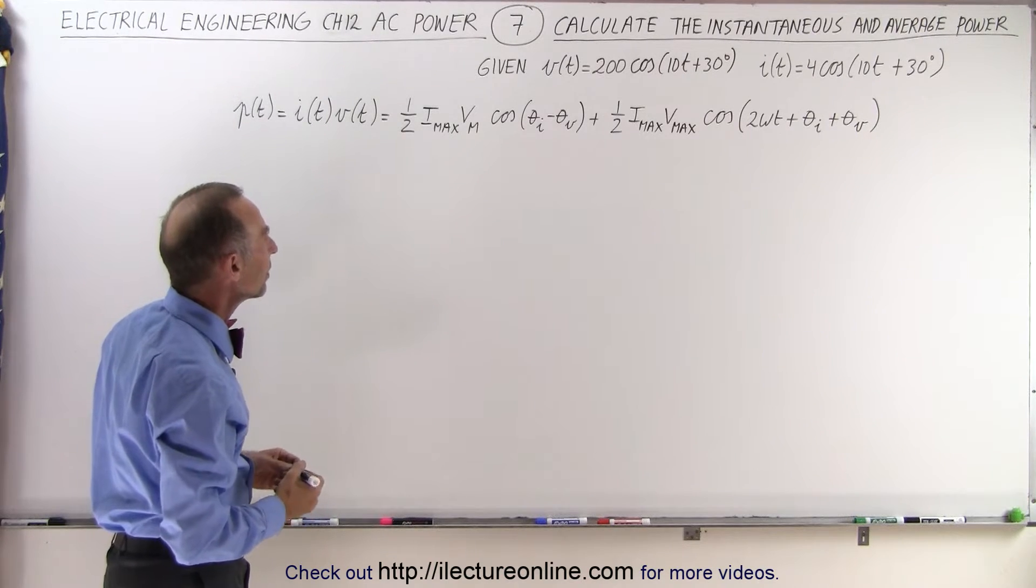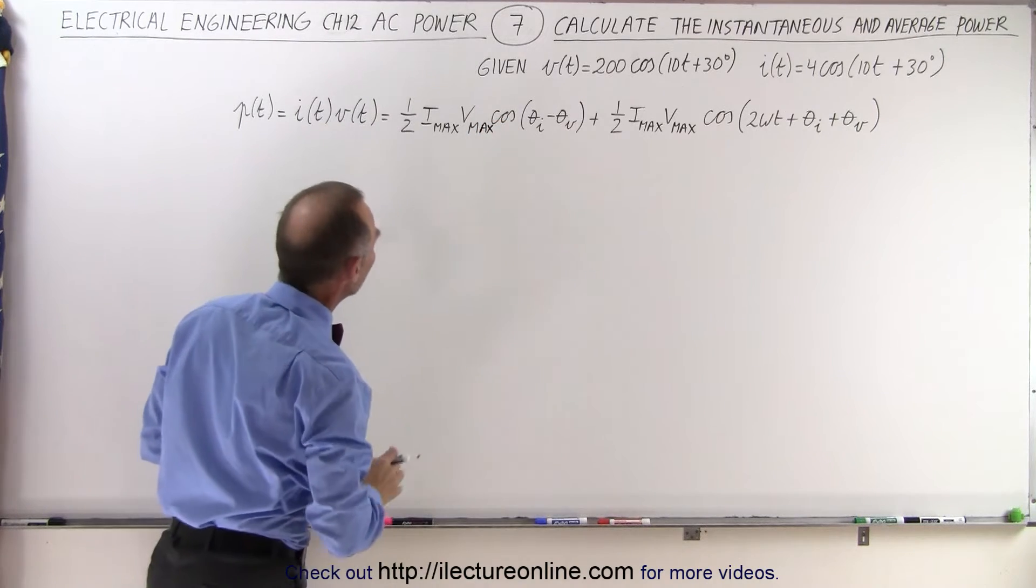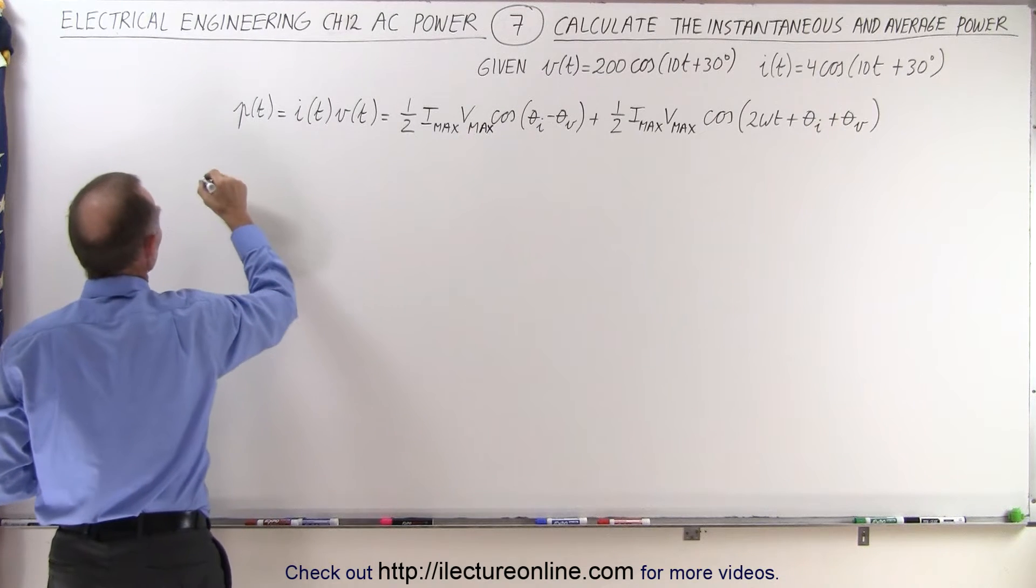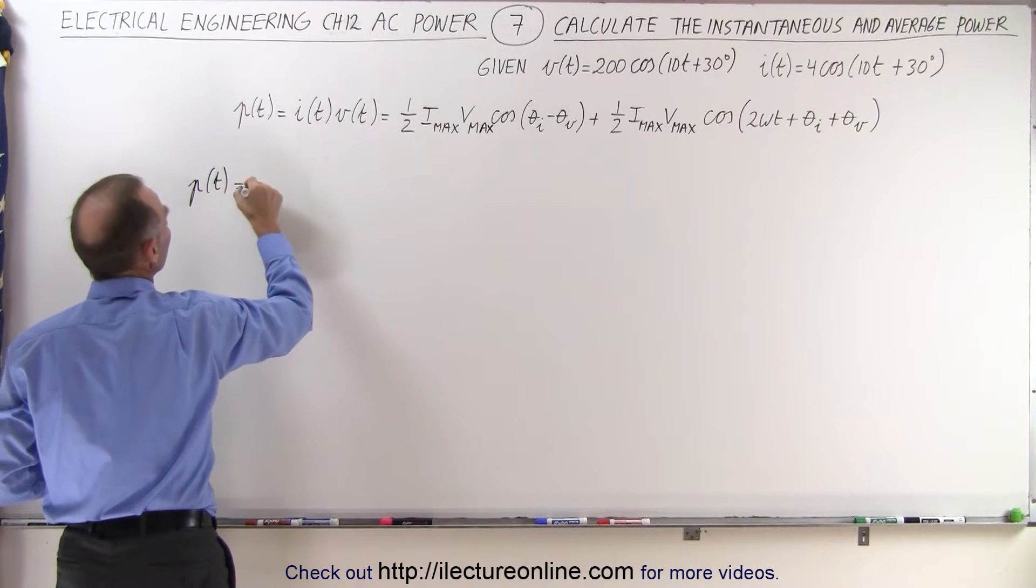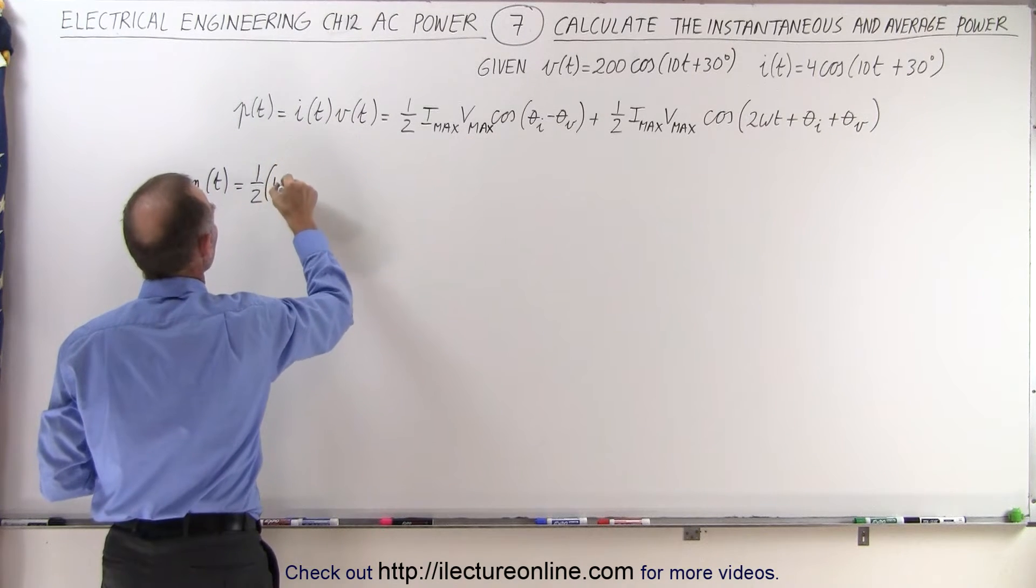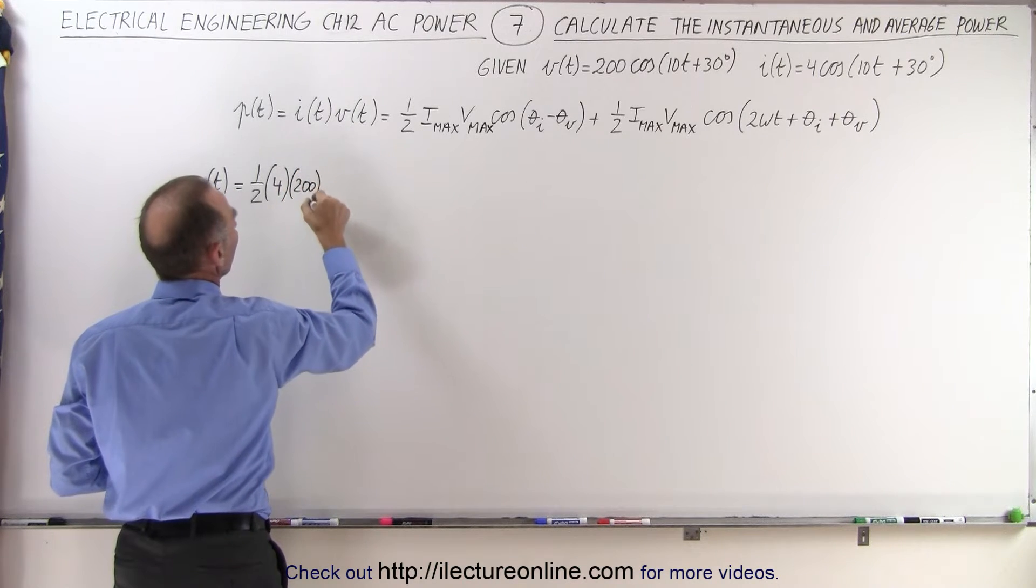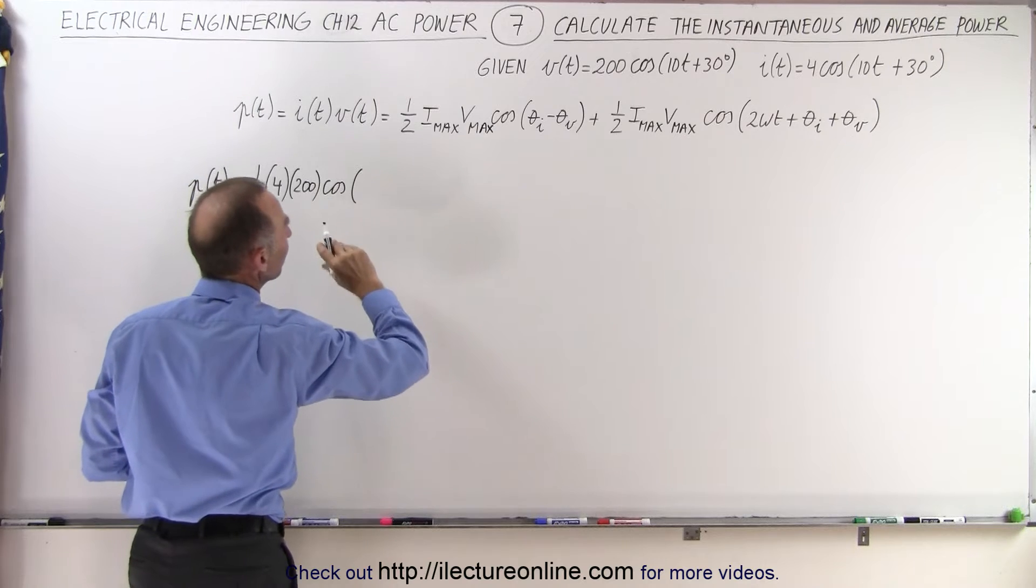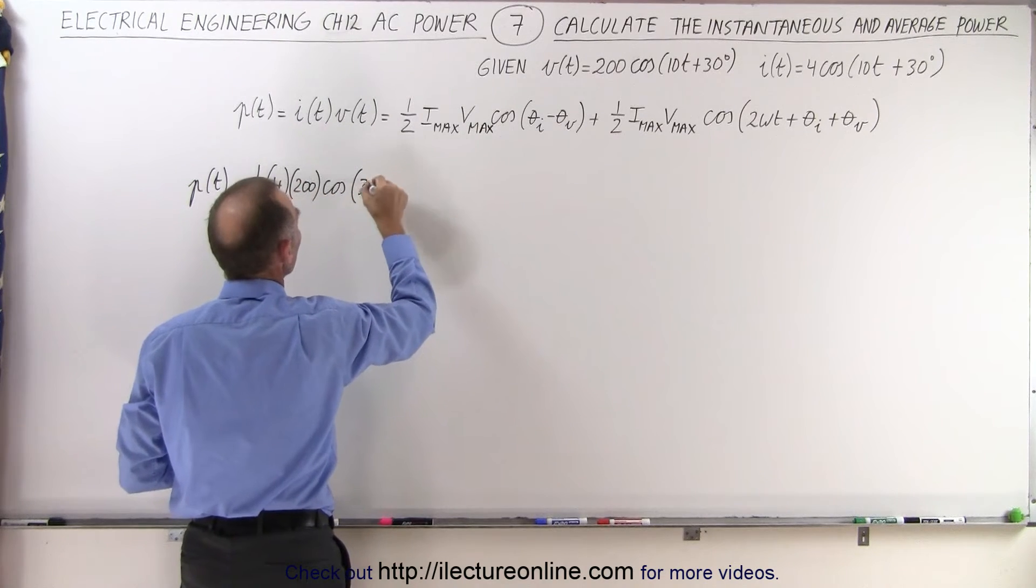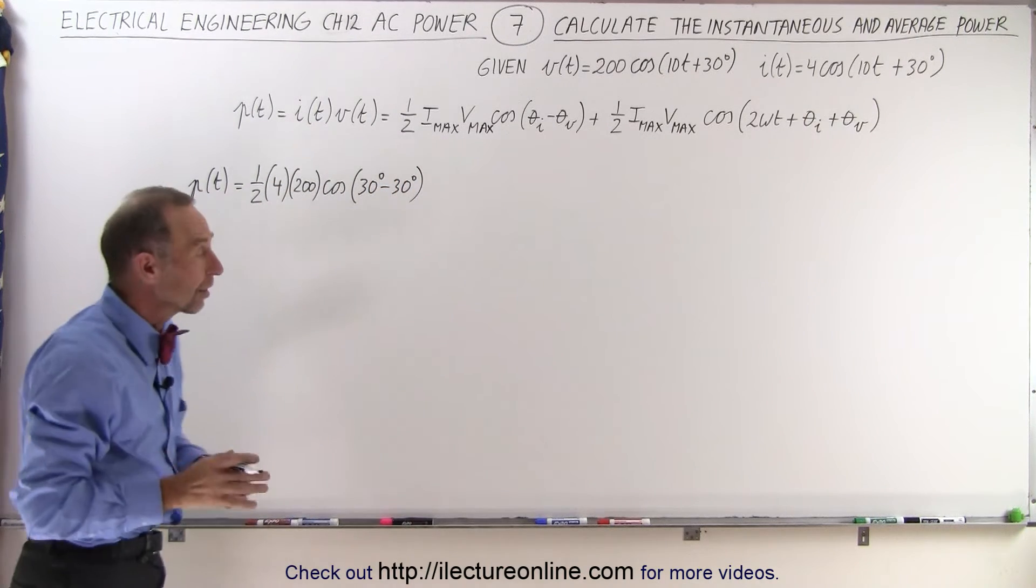So let's go ahead and calculate these. First of all, I should just write Vmax here. Let's go ahead and find the average power. We'll just go ahead and get the whole equation. So the power as a function of time is equal to one half times Imax. Imax is 4 and Vmax is 200. Now multiply that times the cosine times the difference of the two angles. Notice the two phase angles are equal to each other.